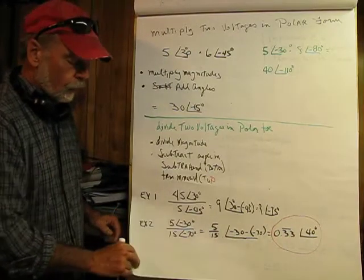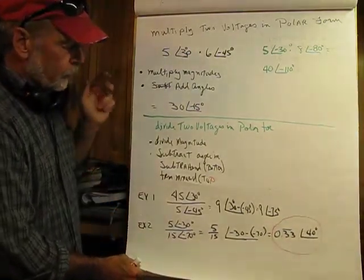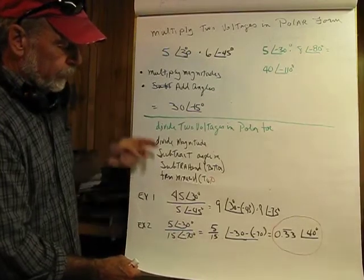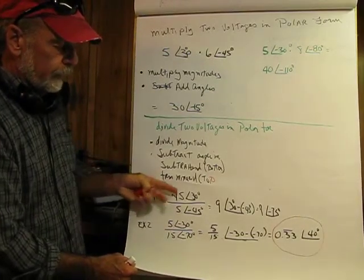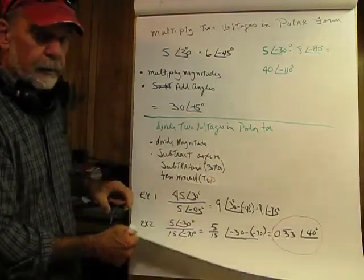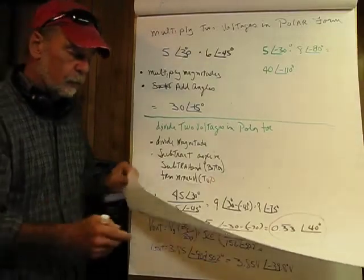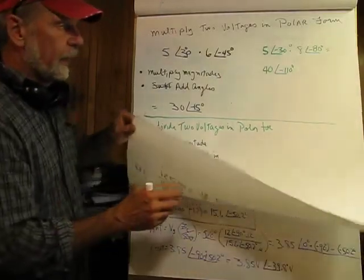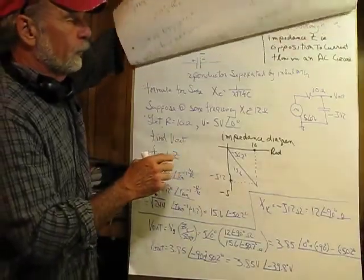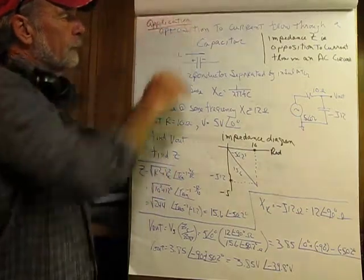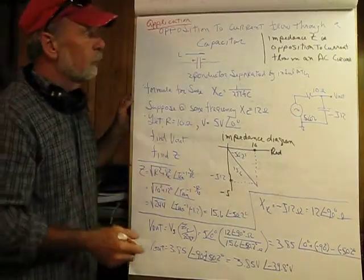Example two: 5 at negative 30 degrees divided by 15 at negative 70 degrees. We divide the magnitudes: 5 divided by 15 gives 0.333 repeating. We have negative 30 degrees minus negative 70 degrees — so negative 30 plus 70 gives a positive 40 degrees. The answer is 0.333 at positive 40 degrees. Be careful with your signs. Multiplying and dividing in polar form is straightforward; adding and subtracting in rectangular form requires keeping track of like terms.